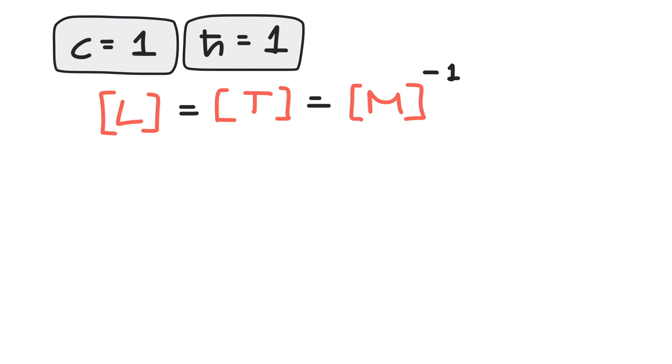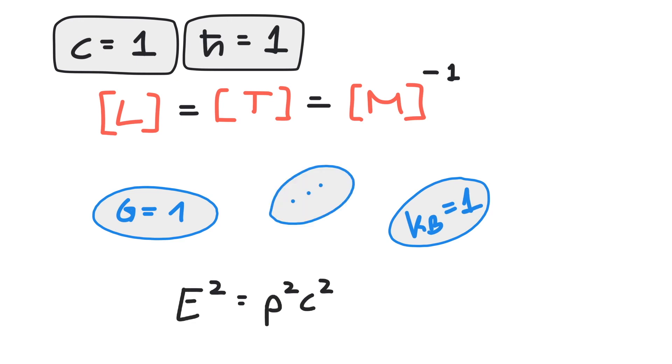So far, we've set the speed of light and Planck's constant to 1. The term natural units, however, can mean several unit systems, depending on which constants were defined to be 1. Some people choose to also set Newton's gravitational constant, Boltzmann's constant or other constants to 1. The more constants you set to 1, the more constants vanish from your equations, thus making them easier to look at.